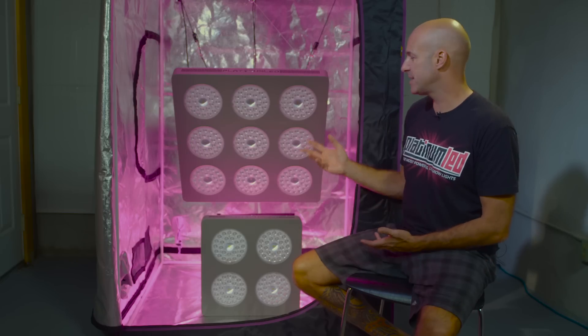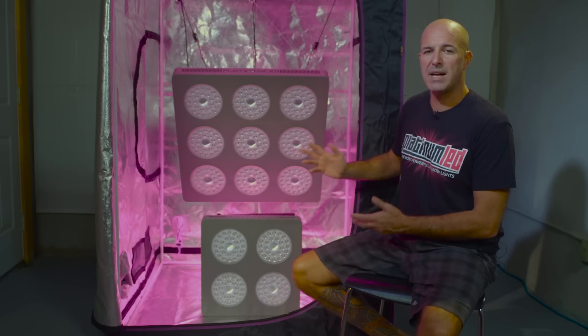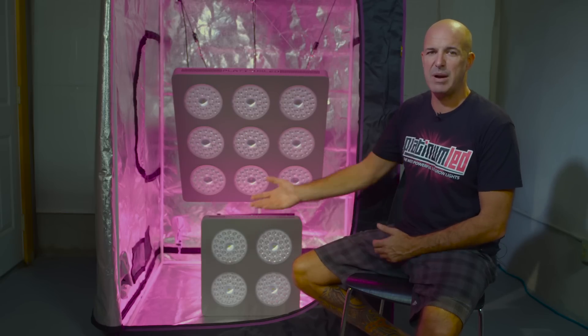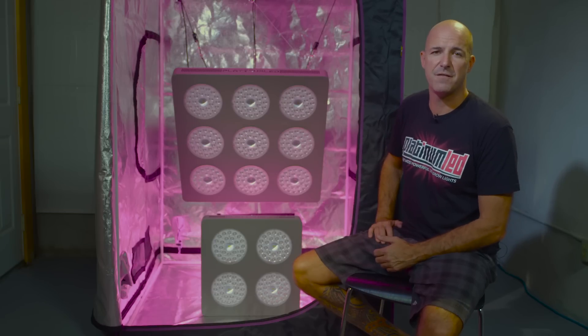As you can see, we designed this series with a few different goals in mind. First of all, we wanted a one light for a tent solution, either a 3x3 or a 4x4, even stretching the P9 up to a 5x5 for vegetative growth.